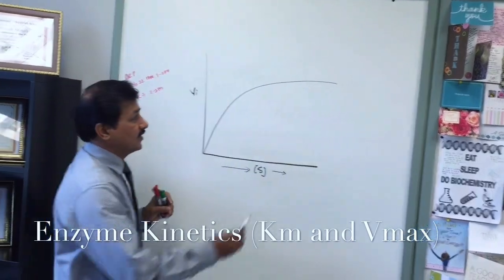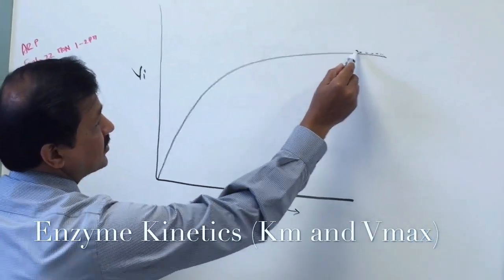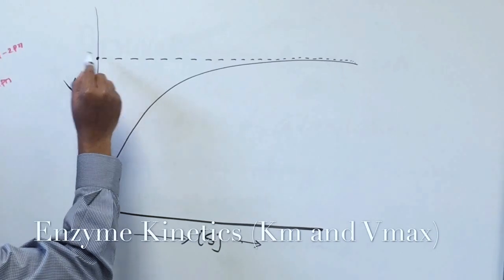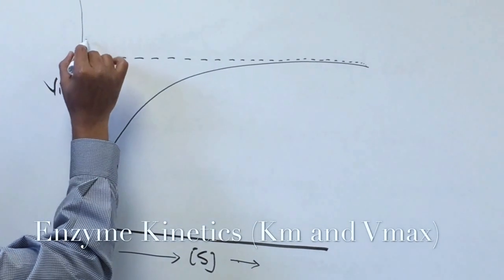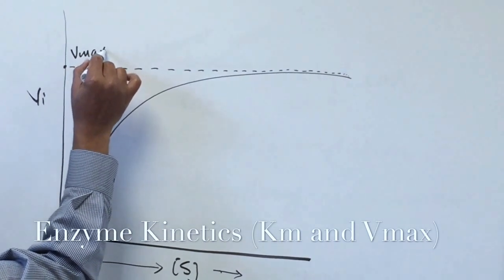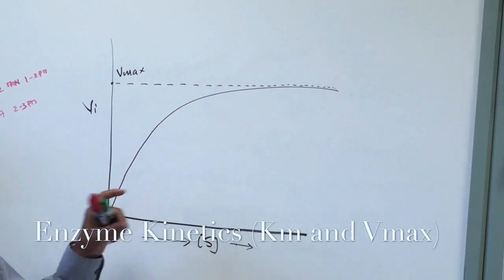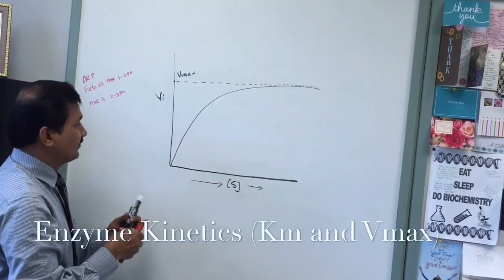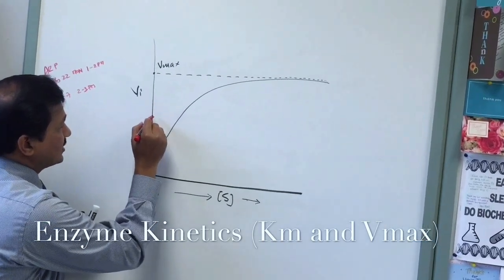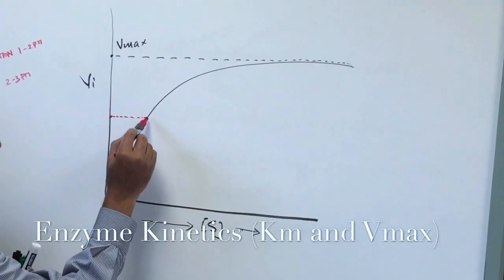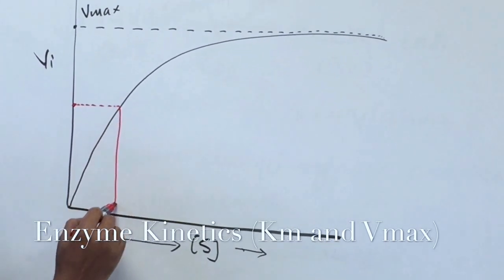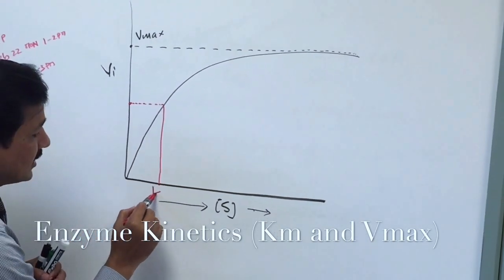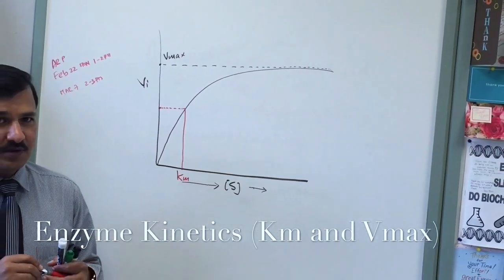At some point the enzymes will get saturated and reach their maximum velocity, taking a plateau stage. Wherever they reach that plateau, you bring that point to the y-axis and wherever it meets is called Vmax — the maximum capacity of that set of enzymes. Take half of that Vmax, interpolate it to the velocity curve, bring it down to the x-axis, and wherever it meets on the x-axis we call that KM for that particular enzyme.